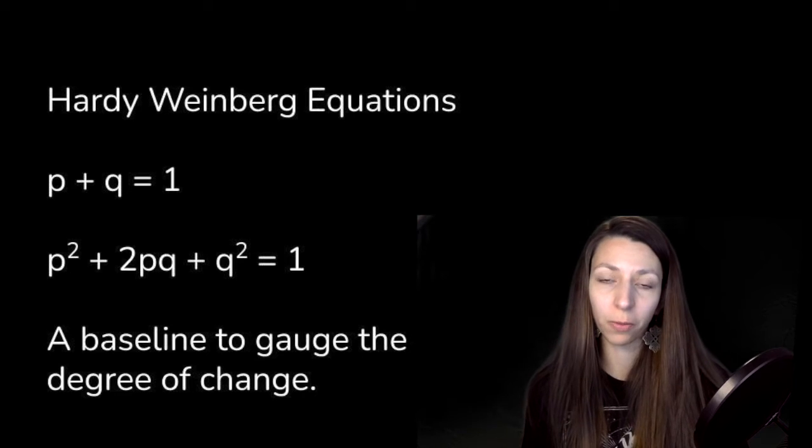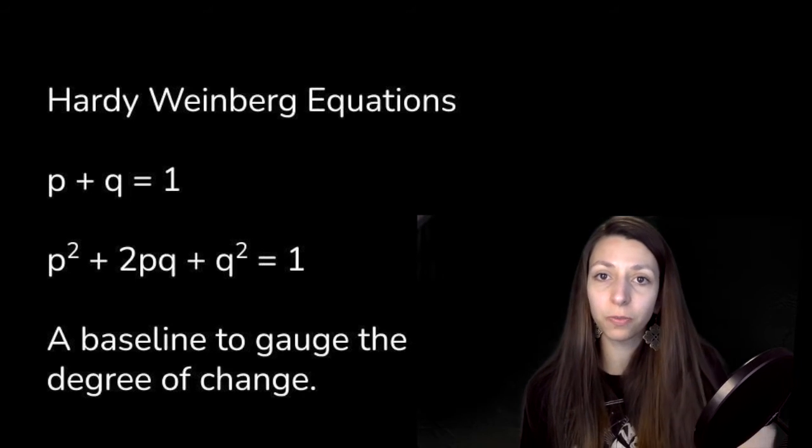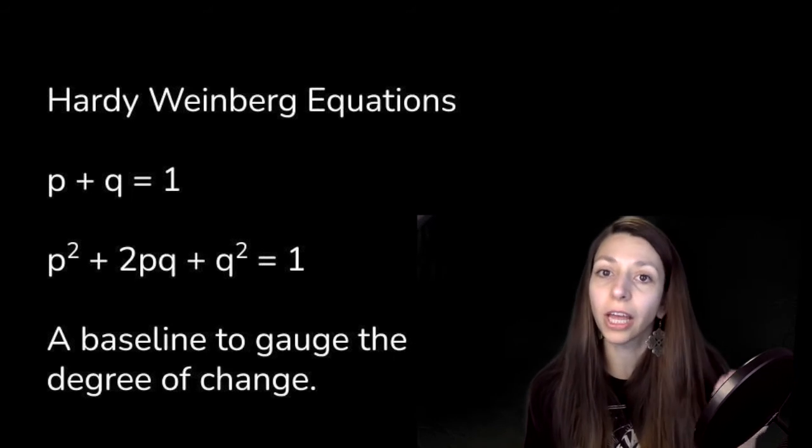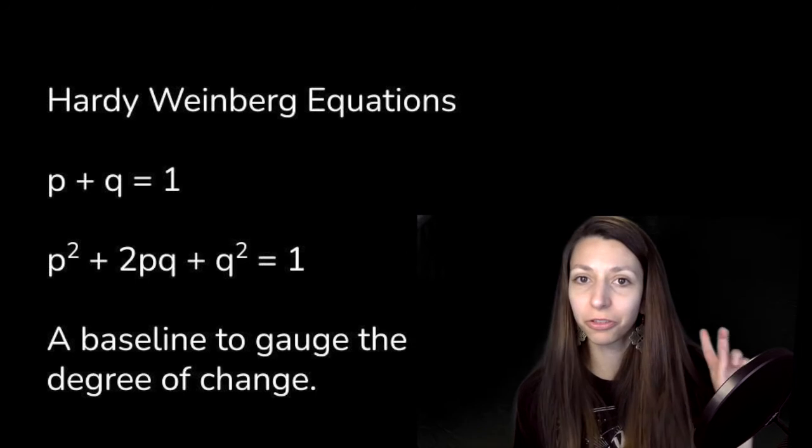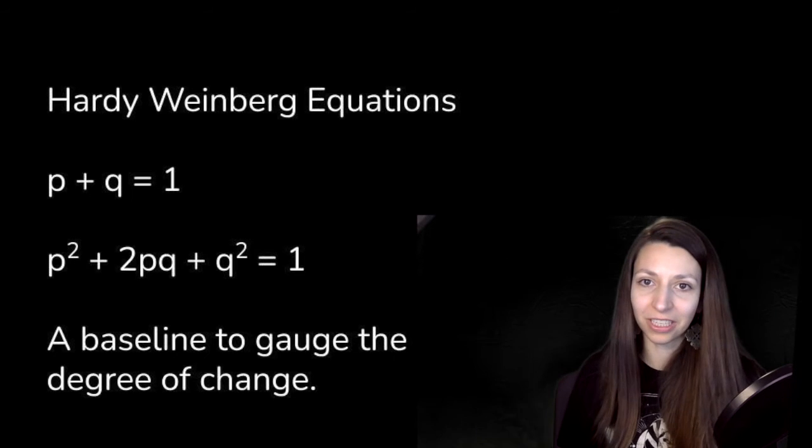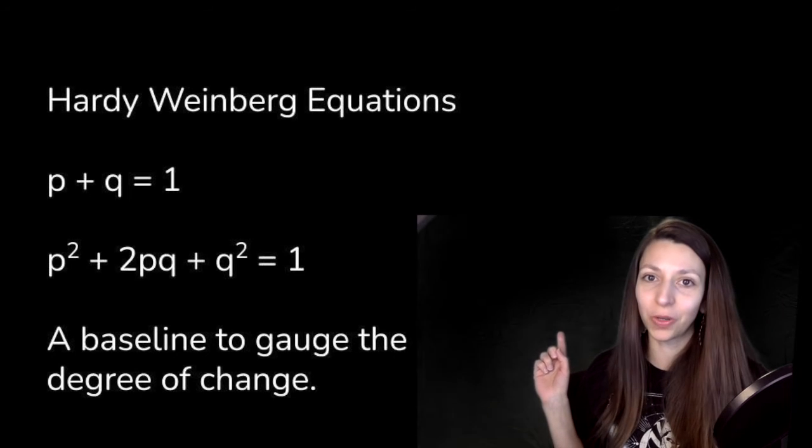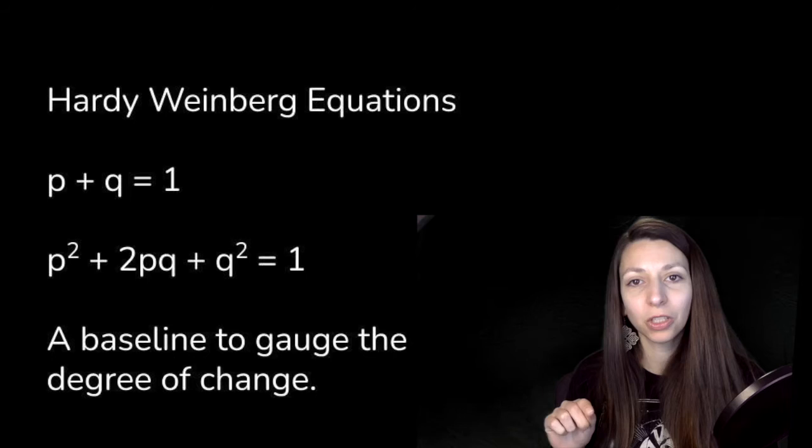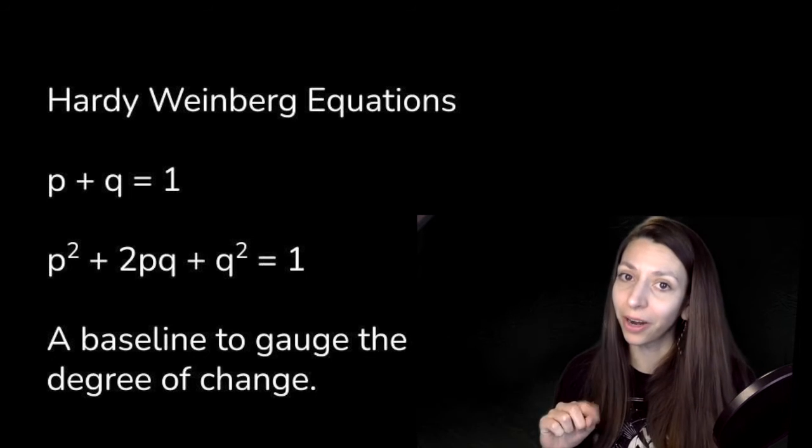There are two equations you need to know for Hardy-Weinberg problems. If you're in AP biology, these are provided on the formula sheet for the AP biology exam, so there's no need to memorize them. You do need to know what they mean and how to use them in a problem. The first one is P + Q = 1. The second one is P² + 2PQ + Q² = 1.